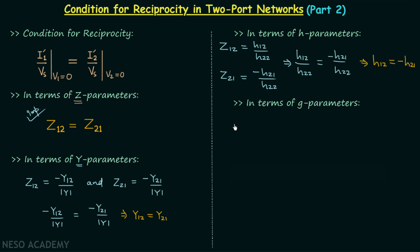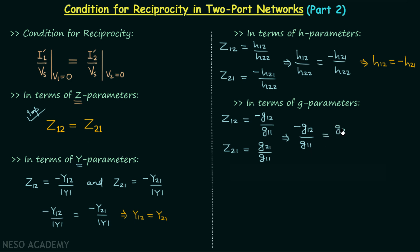We will now find the condition for reciprocity in terms of G parameters. We have converted G parameters to Z parameters and therefore Z12 = -G12 / G11 and Z21 = G21 / G11. Setting Z12 = Z21, we get -G12 / G11 = G21 / G11, so finally G12 = -G21. This is the condition for reciprocity in terms of G parameters. Notice it is similar to the H-parameter condition — if you remember one, you will automatically remember the other.